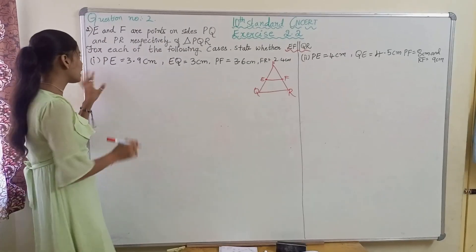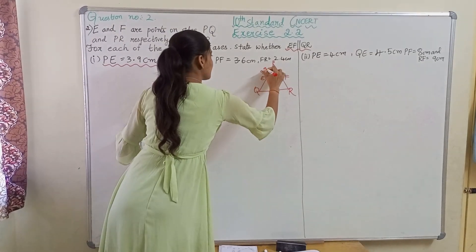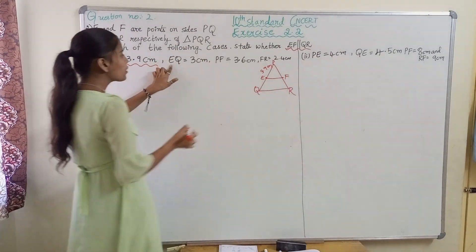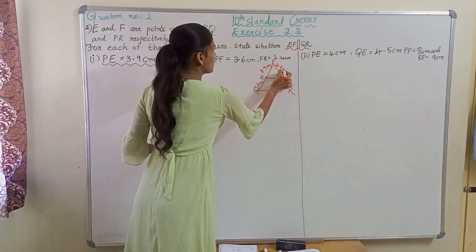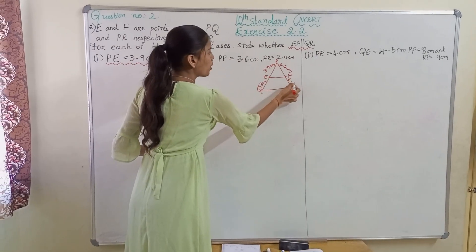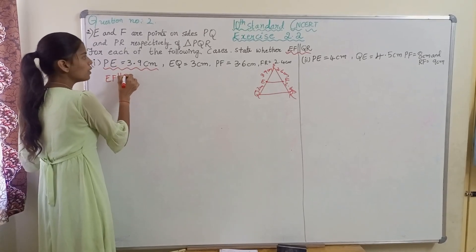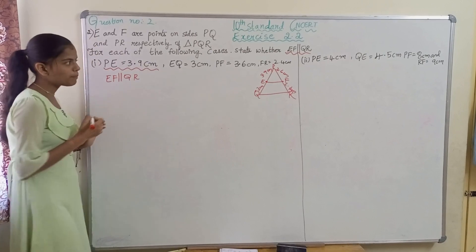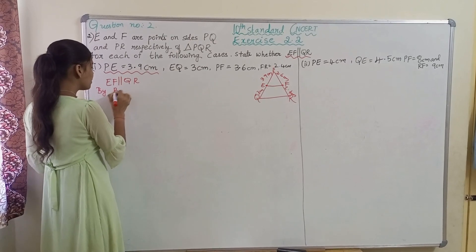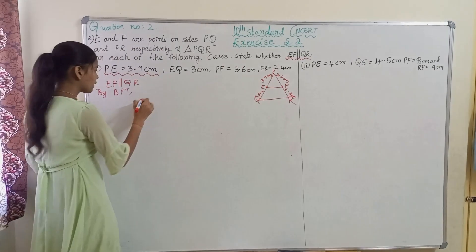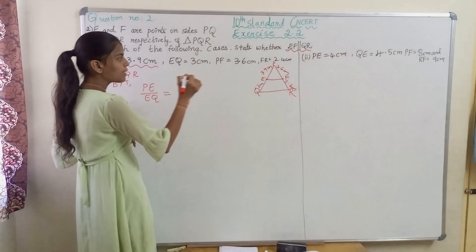So let us give our data here. PE is 3.9 cm, EQ is 3.6 cm, PF is 3.6 cm, and FR is 2.4 cm. Now we have to prove EF is parallel to QR. How will we prove? By BPT theorem. So by BPT: PE upon EQ will be equal to PF upon FR.